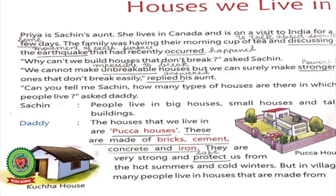Priya is Sachin's aunt. She lives in Canada and is on a visit to India for a few days — underline 'few' and write the meaning: some. The family was having their morning cup of tea and discussing the earthquake that had recently occurred. Underline 'discussing' — meaning: to talk about something. Underline 'earthquake' — meaning: movement of earth's surface. Underline 'occurred' — meaning: happened.